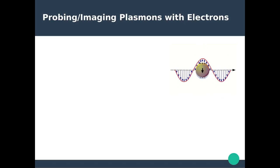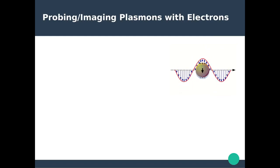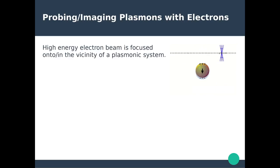We can excite plasmons using optical excitations — an electromagnetic wave that oscillates in time and propagates in space. When high-energy electrons are focused onto or near a plasmonic structure, those electrons have electromagnetic fields associated with them. This is what allows you to excite the plasmons in a given plasmonic structure.